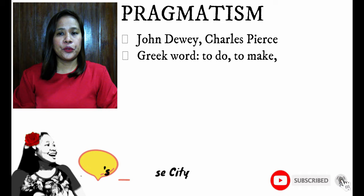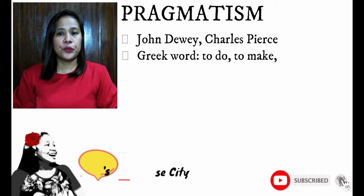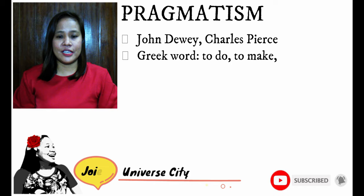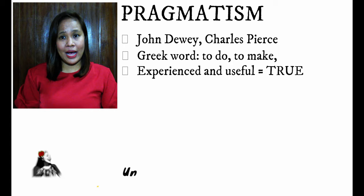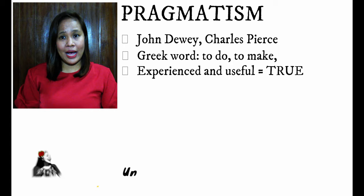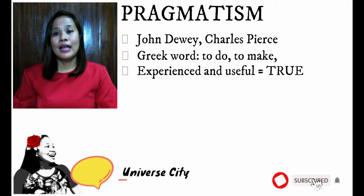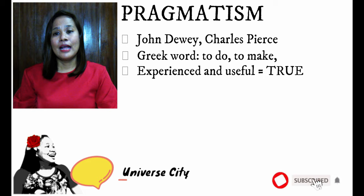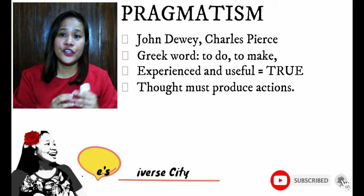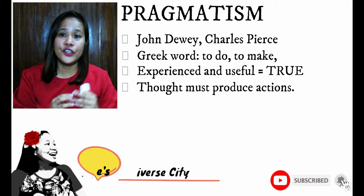Pragmatism actually came from a Greek word which means to do, to make, or to accomplish. Pragmatism believes that what is experienced in real life, what is useful to real life, is the reality. That is why pragmatism believes in the functionality and practicality of everything. What is functional, what is practical, and what is practicable — these are the things that are supposed to be learned by students in school.